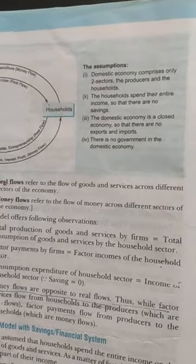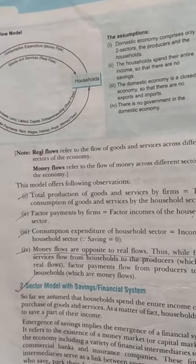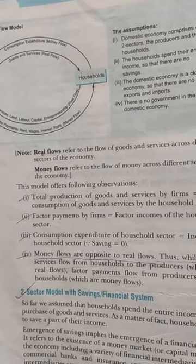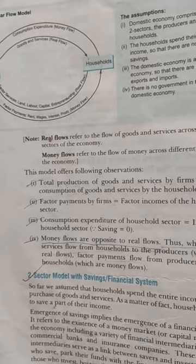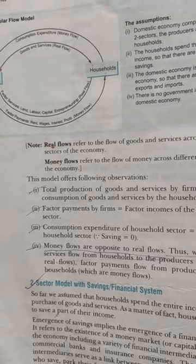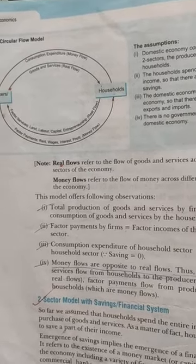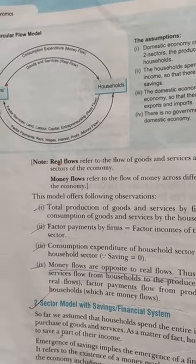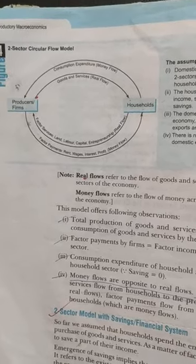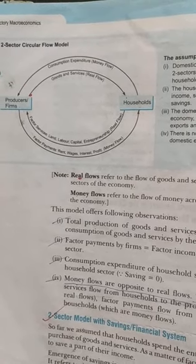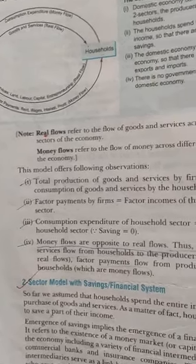In the last class we studied the circular flow model and the two-sector model with saving. In the two-sector model, it is one household that produces. Last class we discussed the two-sector model and saving. The circular flow was introduced in that session.